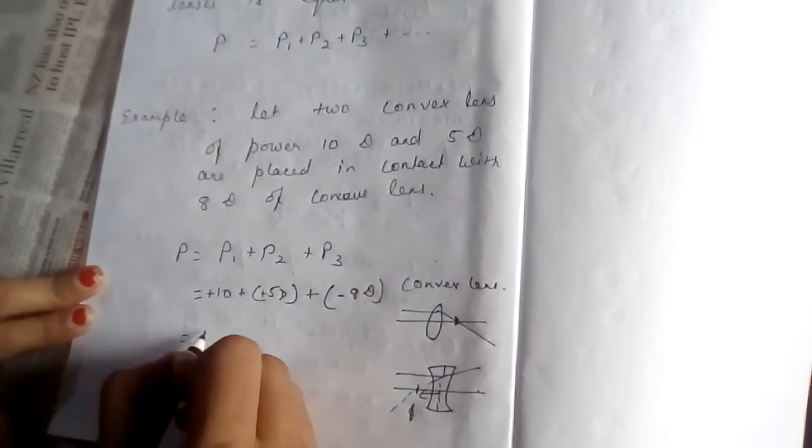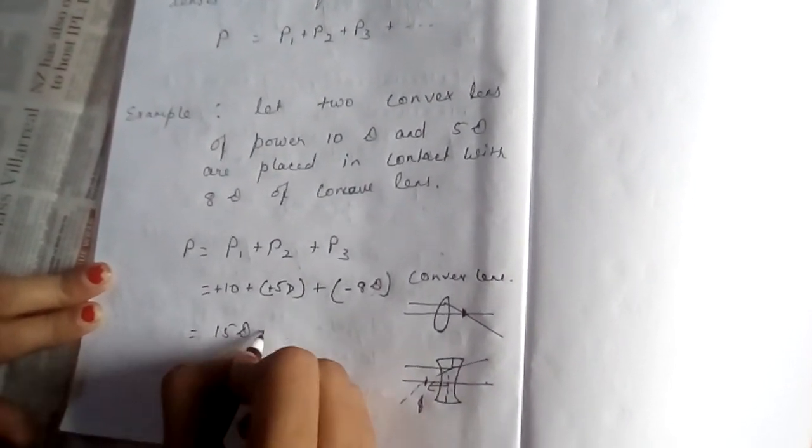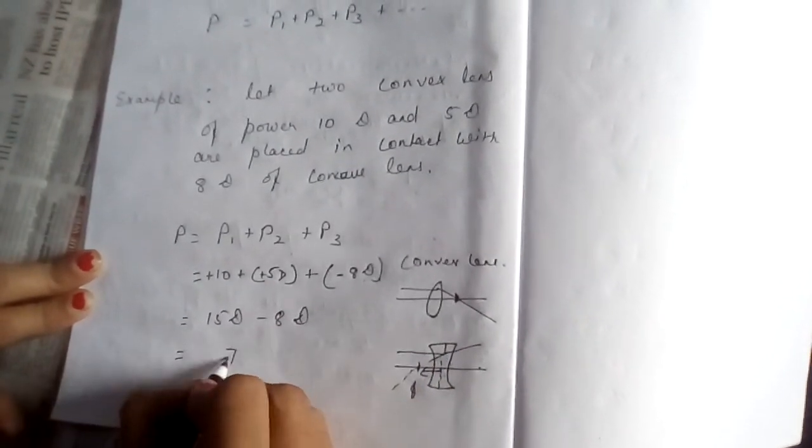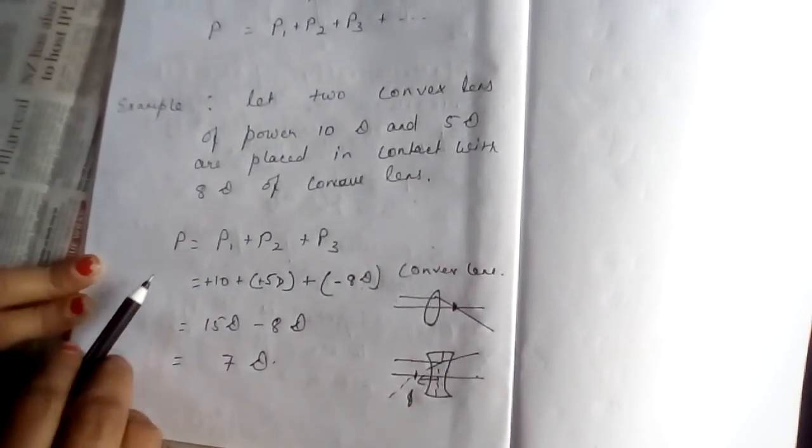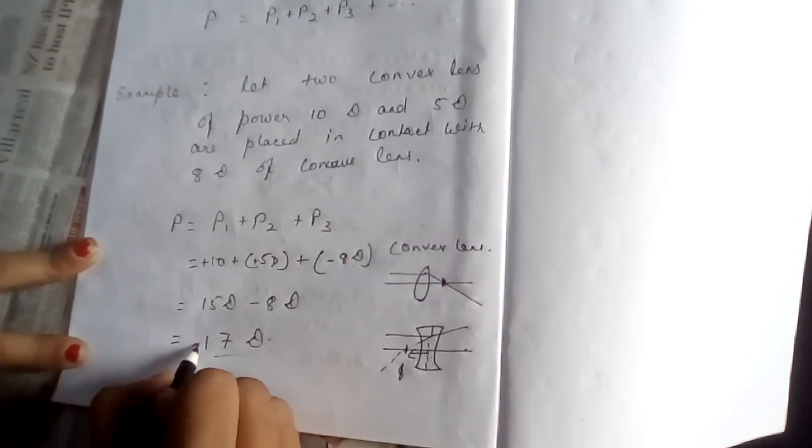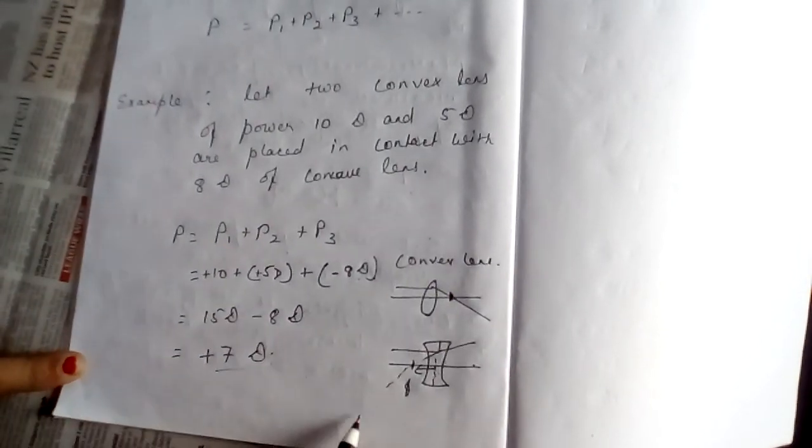We can write minus 8 diopter for concave lens. So, here we are getting 15 diopter minus 8 diopter, that is 7 diopter. So, combination of lenses, you have got 7 diopter, that is positive 7 diopter. Okay.